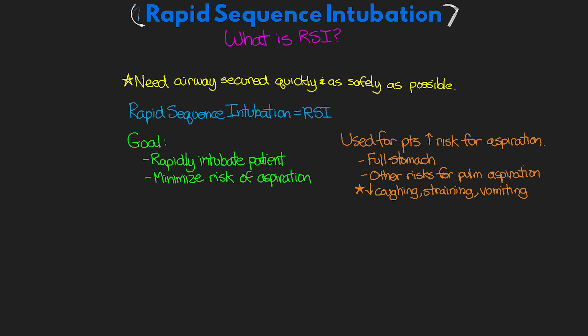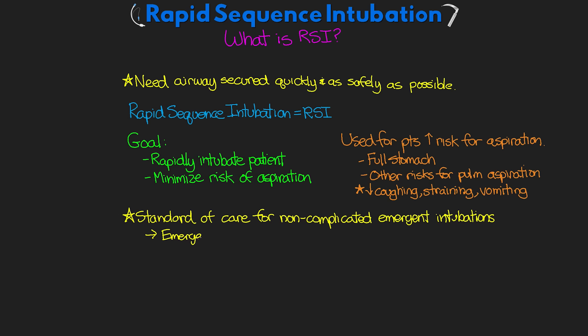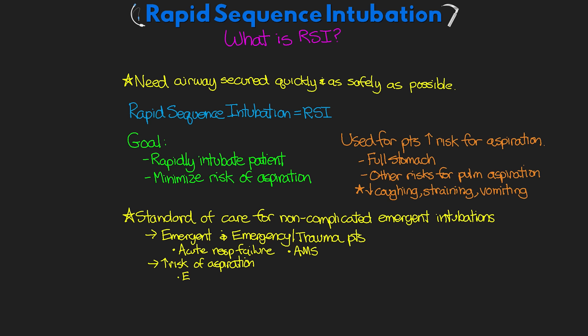The use of RSI really is the standard of care for non-complicated emergent intubations. It's most often utilized in emergent and emergency trauma patients due to acute respiratory failure or altered mental status where they are unable to protect their own airway. Patients with high risk of aspiration, such as those with upper GI bleeds, would also be indicated for RSI, as well as patients assumed to have a full stomach, which could include laboring patients.